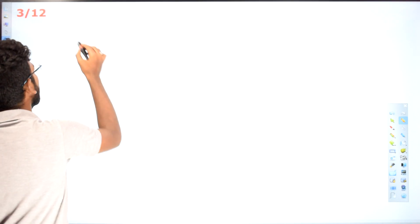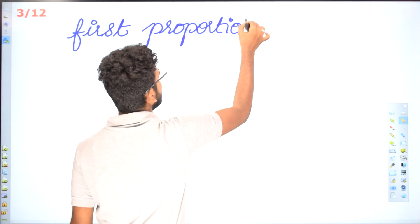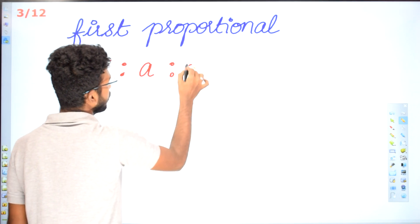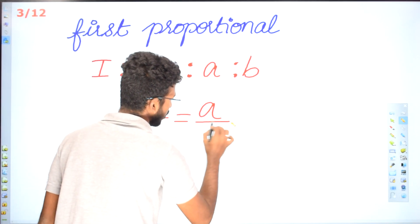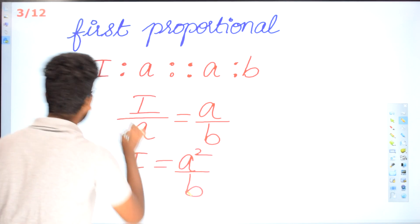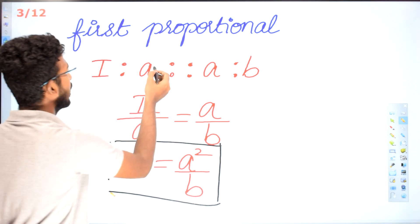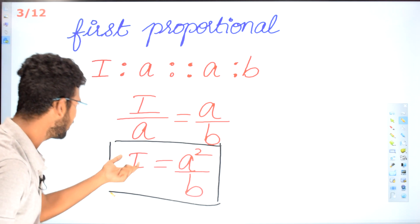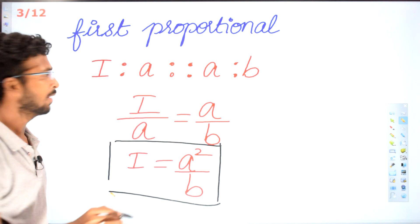From an exam point of view, let's look at types of proportionals. First proportional: if first is to A proportion A is to B, which is nothing but first divided by A is equal to A divided by B. From this, first is equal to A squared divided by B. That is the first proportion formula.